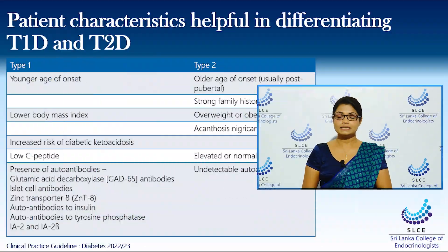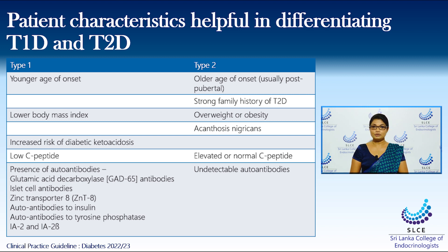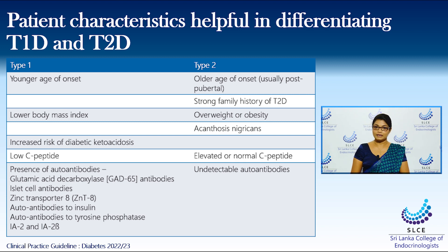Clinicians often find it difficult to diagnose their patients as type 1 or type 2. To help them with this, there are certain patient characteristics to differentiate. In type 1, most patients are younger compared to type 2, where the patients are older, usually post-pubertal. They usually have a stronger family history. Type 1 patients tend to have a lower body mass index, while patients with type 2 tend to be overweight or obese.